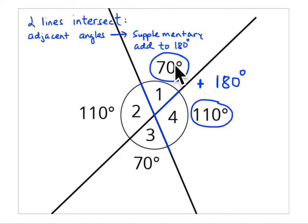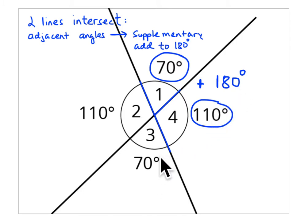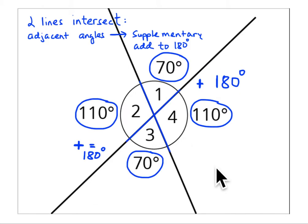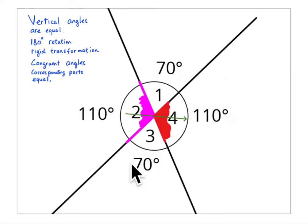These two angles are supplementary, they add to 180 degrees. These two angles are supplementary, and these two angles are supplementary as well — it's just showing the same concept from multiple pairs at the intersection.